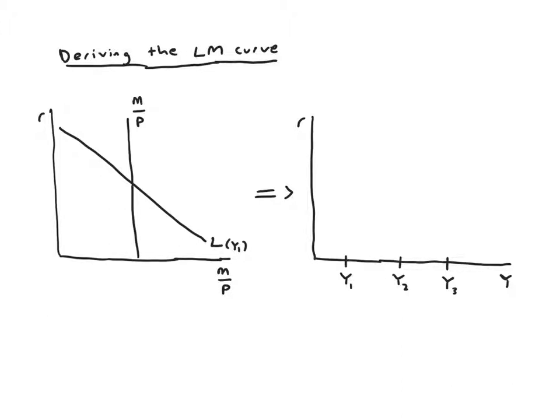We've labeled the diagram for y1, this is pretty much just copying from the previous slide. Our money supply is fixed, it's not influenced by income but our money demand does depend on income.